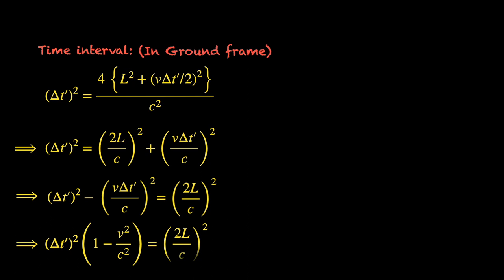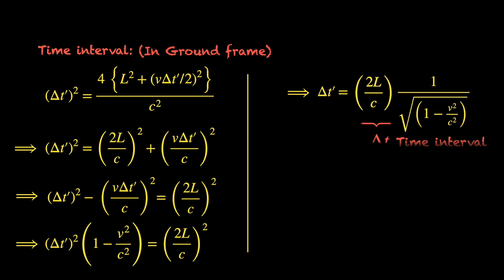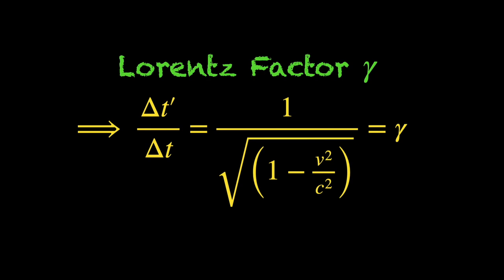You can easily factor the delta t prime out to one side. On the other side, we get 2l by c. That's the time interval calculated in the cart frame, remember? So, that times another factor, which only depends on the relative velocity between the ground and the cart. So, this factor, basically, the ratio of delta t prime over delta t is what we call the Lorentz factor or gamma factor.